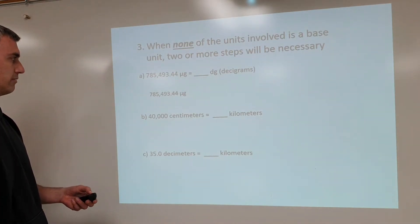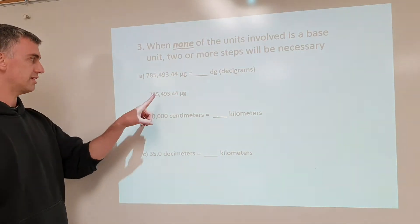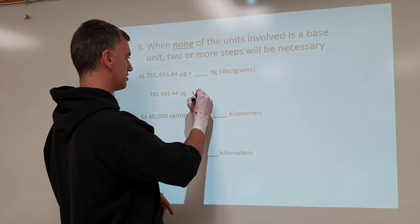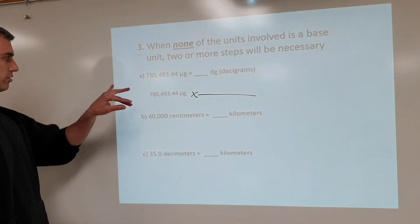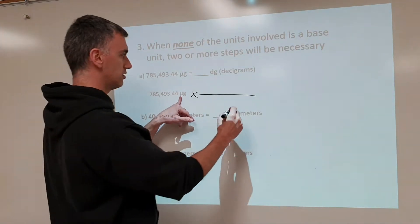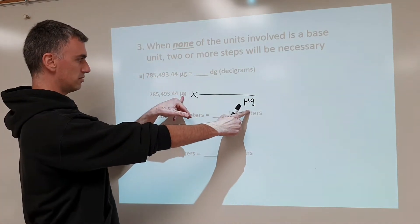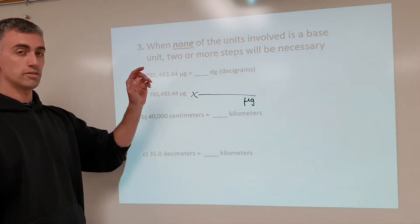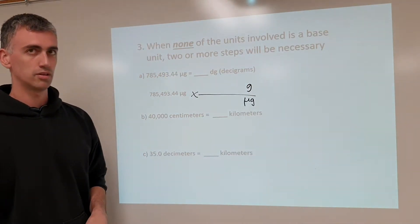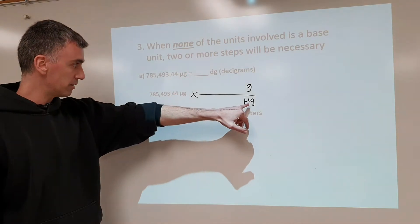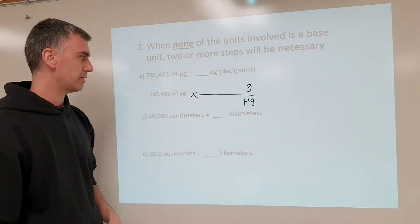So how would you go through that from scratch? Step one: write the given. Step two: set up your conversion factor. We put microgram here so it can cancel. We convert from what we're starting with to the base unit — from microgram to gram. So we put microgram on the bottom so it can cancel, and gram on top because it's the only space left over.